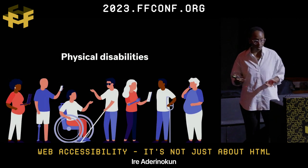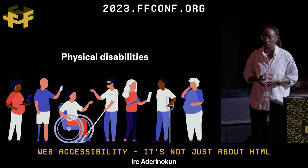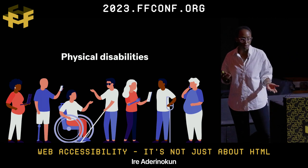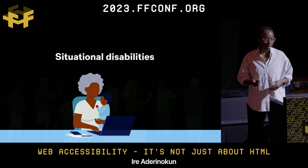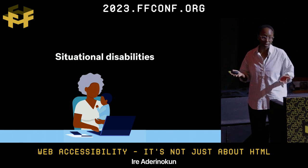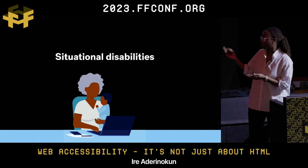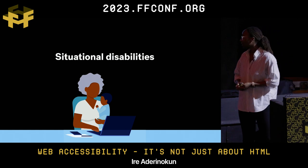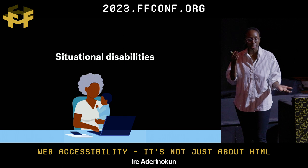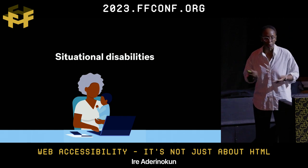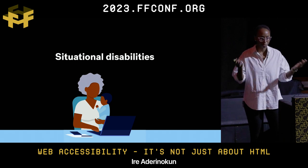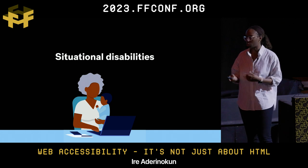Firstly, we have people with physical disabilities, which is what we typically think about — like making your website usable for someone with a visual impairment who uses a screen reader. But we also have situational disabilities — a more temporary situation, like someone holding a baby in one hand and only able to use their website with the other. Even though they technically have two working hands, it's similar to having one. Or maybe you've had laser eye surgery and can't use your computer normally.